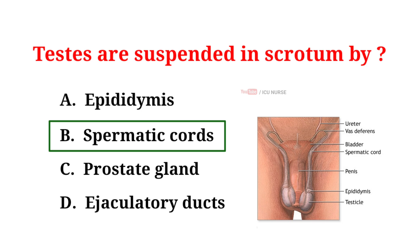Testes are suspended in the scrotum by structures called the spermatic cords. The scrotum is a sac-like structure outside the body, providing a cooler environment for the testes. This low temperature is crucial for sperm production and viability. The spermatic cords also enable testicular movement for temperature regulation. Proper testicular positioning ensures healthy sperm development and reproductive function in males.